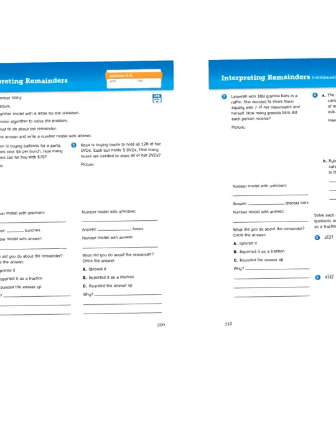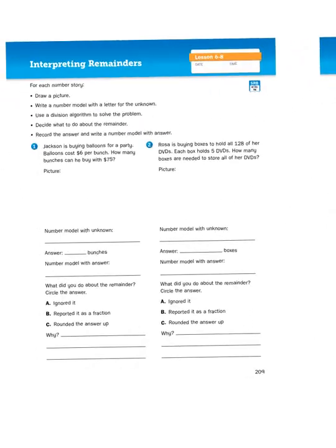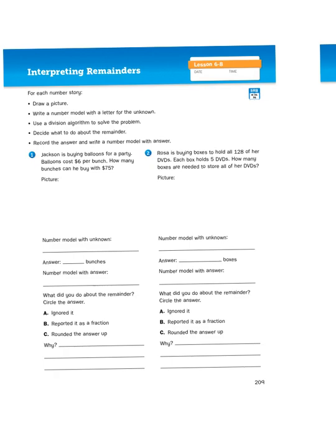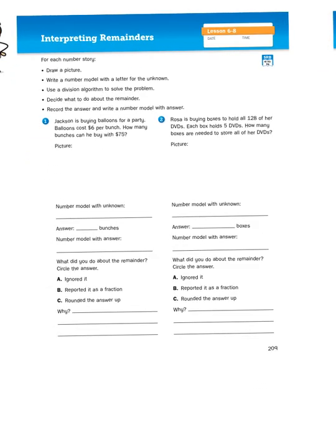So it says here for each number story draw a picture, write a number model with a letter for the unknown, use a division algorithm to solve the problem, and then it says decide what to do about the remainder and record your answer and write a number model with the answer. So that question decide what to do about the remainder goes back to what type of number story problem you're being asked to solve.